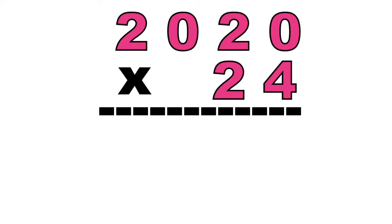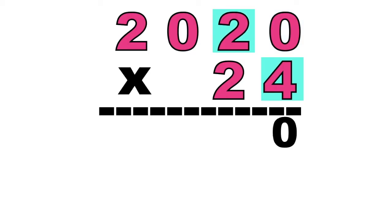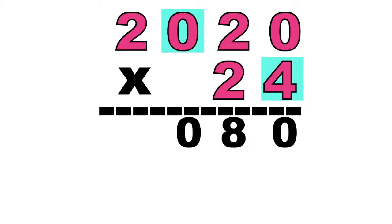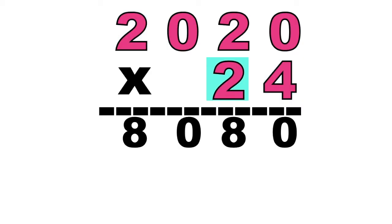Let's have our last example: 2,020 times 24. Let's multiply digit 4 on each digit at the first factor. 4 times 0 equals? Good job! It's 0. How about 4 times 2? That is 8. How about 4 times 0? Very good! It's 0. How about 4 times 2? Good job, children. It's 8. Let's proceed to the second digit at the second factor.